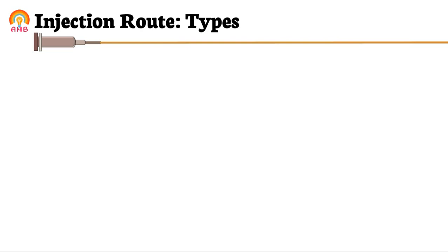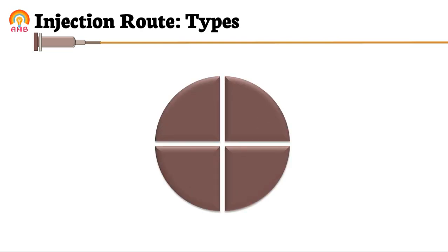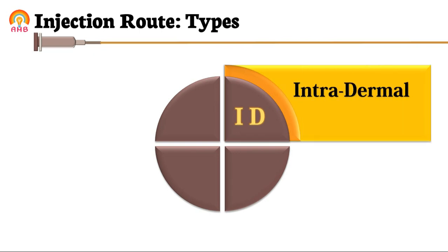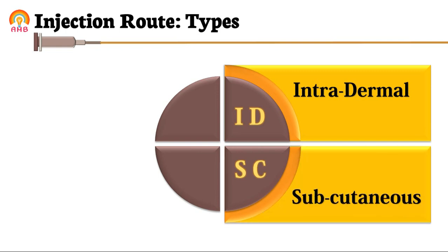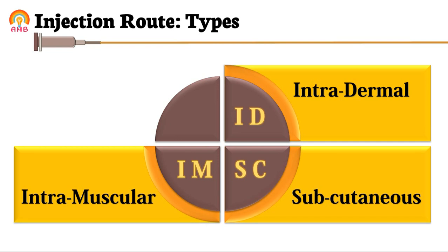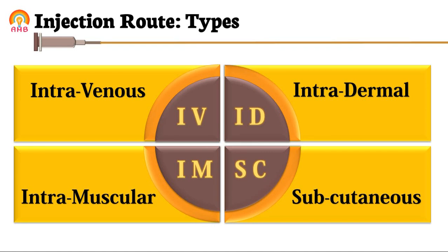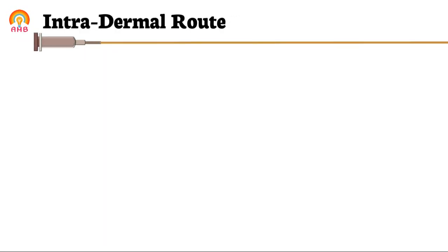Injections are of different types depending upon the site or tissue of the body where the drug is introduced. First is ID — intradermal injections. Second is SC — subcutaneous injections. Third is IM — intramuscular injection. And fourth is IV — intravenous injections. We will discuss all these routes one by one, starting with the intradermal route.